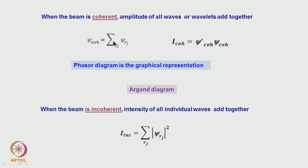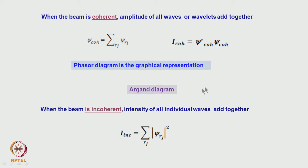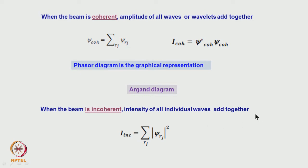In summary: for coherent beams, amplitudes are added together and then the intensity |ψ|² is computed to find the net intensity, whereas for incoherent beams the intensity of each wave is calculated separately and then added. I hope I have made very clear the importance of having coherent beams. Thank you very much.